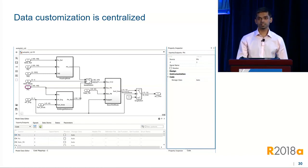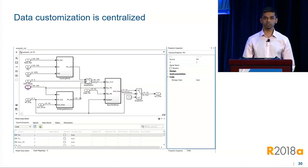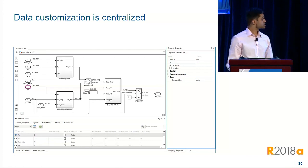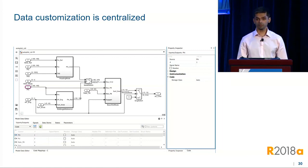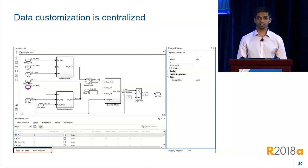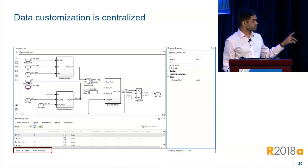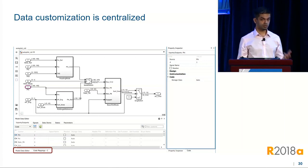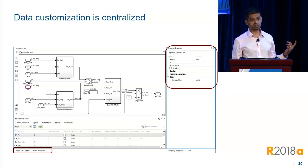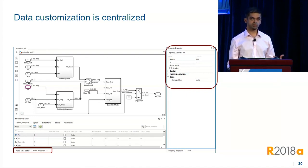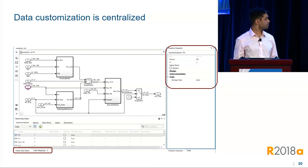The code perspective is a lot more than just defaults. It's an entire environment geared towards code customization. If you need to customize data, you can use the defaults, or you can use the model data editor to customize individual model elements. The model data editor is preconfigured for code. You can also use the property inspector, also preconfigured for code — this is a really code-centric view of these tools.